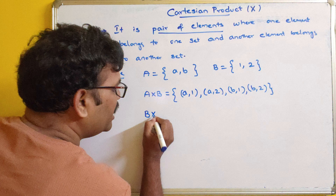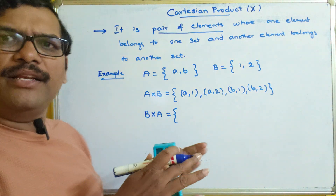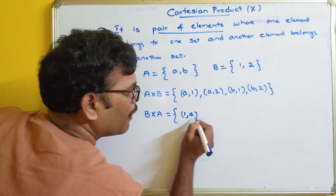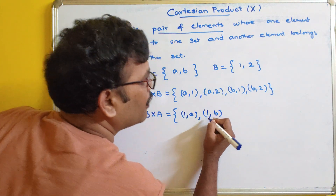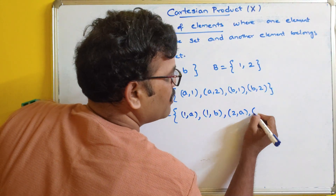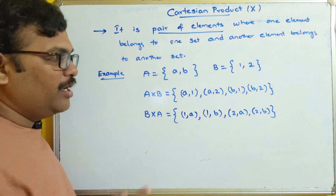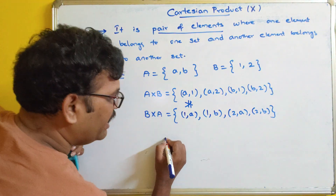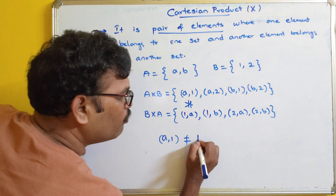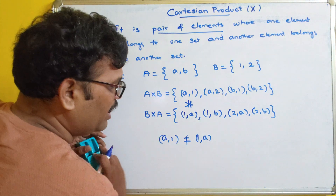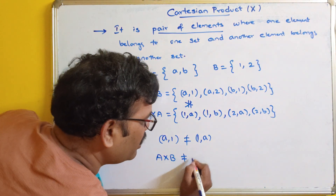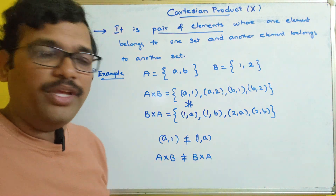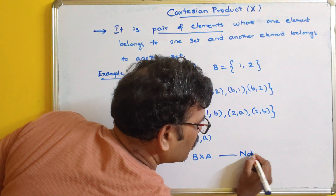Similarly, if we compute B cross A, we get the same number of pairs but with elements in different order. Starting from B to A: (1,a), (1,b), (2,a), (2,b). You can observe these two are not equal — (a,1) is not equal to (1,a). So A cross B is not equal to B cross A.